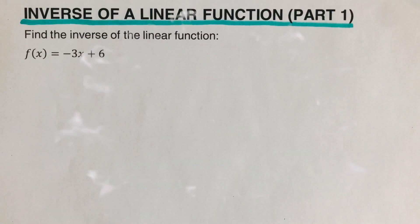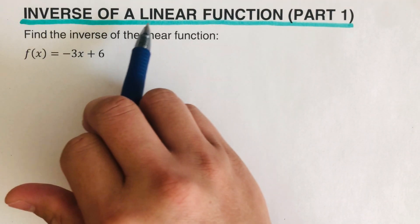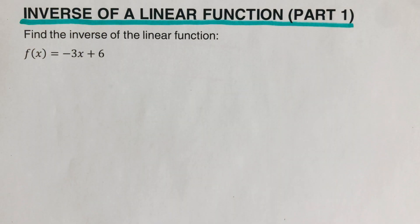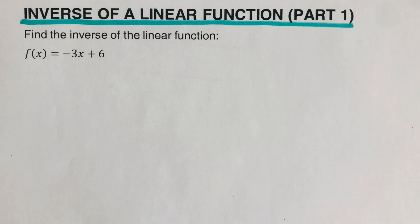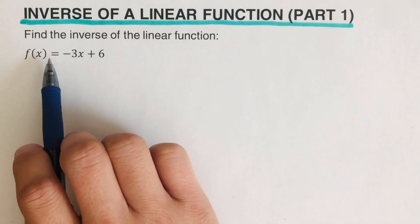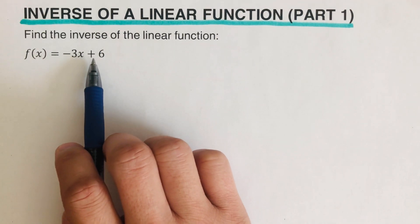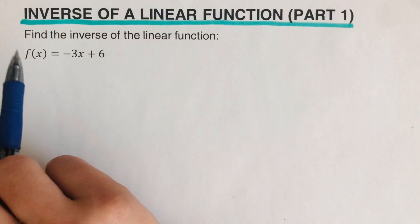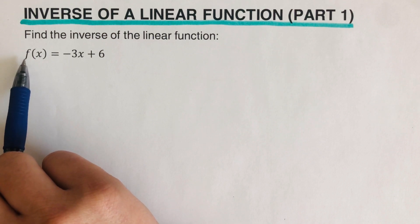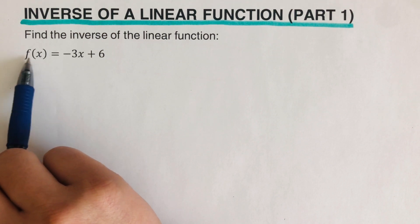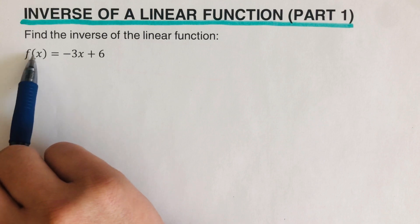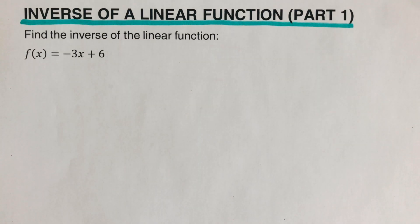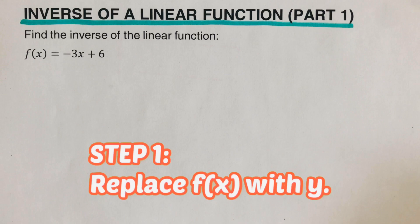Hello everyone. In this video we will determine the inverse of a linear function. In order to determine the inverse of any linear function, we will be following three steps, and we're going to use these three steps in this example: f(x) = -3x + 6. Note that f(x) may be m(x), k(x), h(t) — it can be any letter.